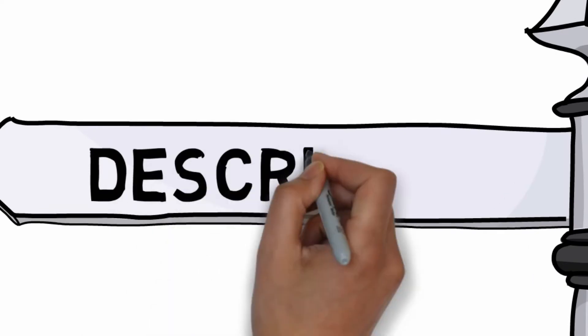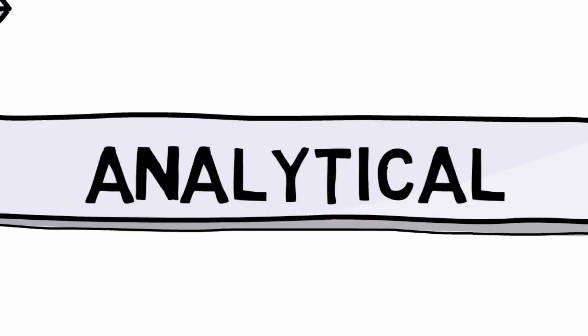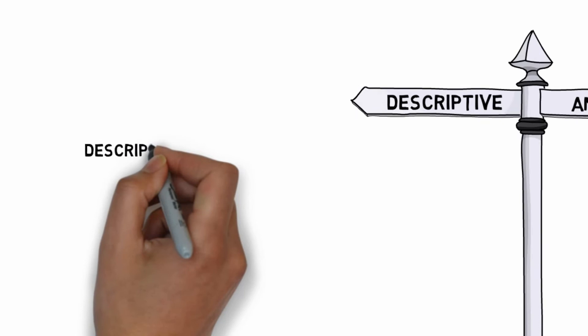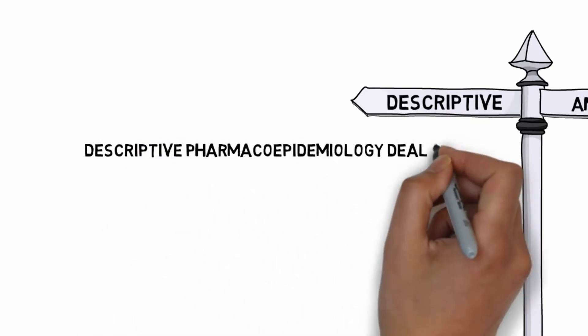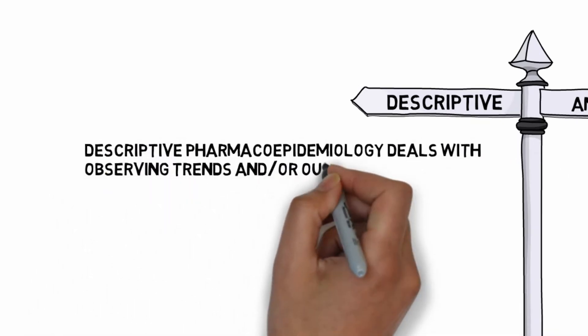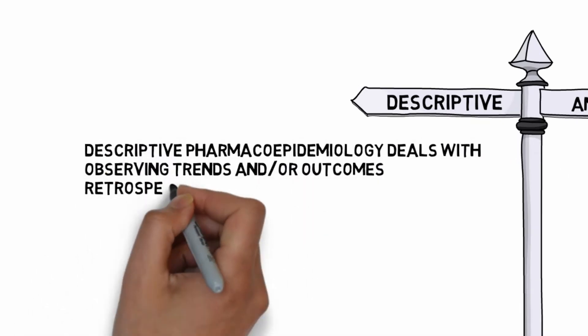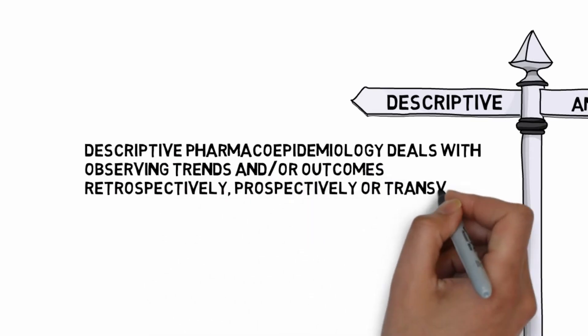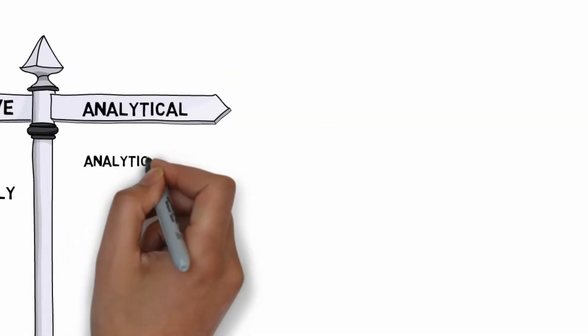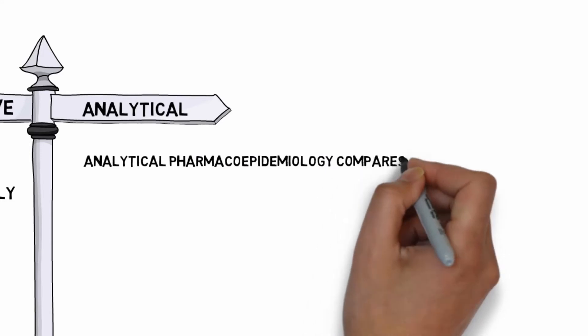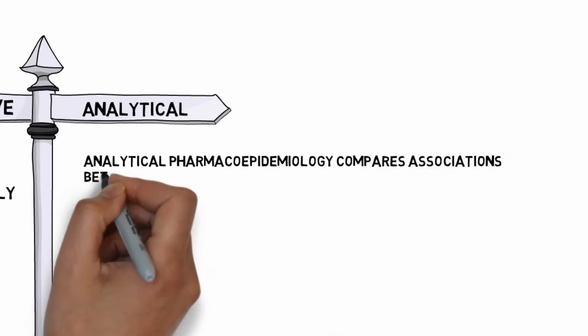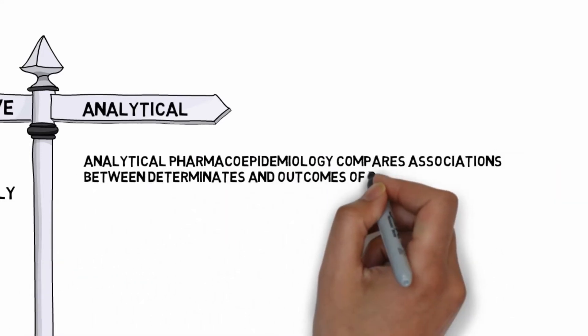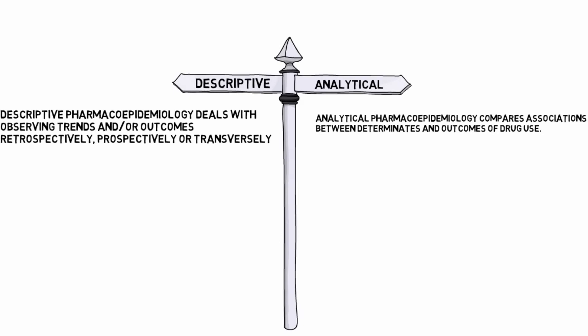Pharmacoepidemiology applies two common methods. Usually both methods complement one another to achieve its objective. First, descriptive: Descriptive Pharmacoepidemiology deals with observing trends and outcomes retrospectively, prospectively, and transversally. Second, analytical: Analytical Pharmacoepidemiology compares associations between determinants and the outcomes of drug use.